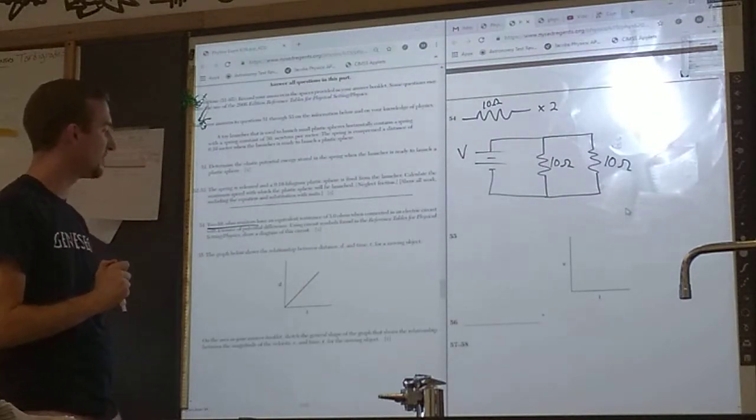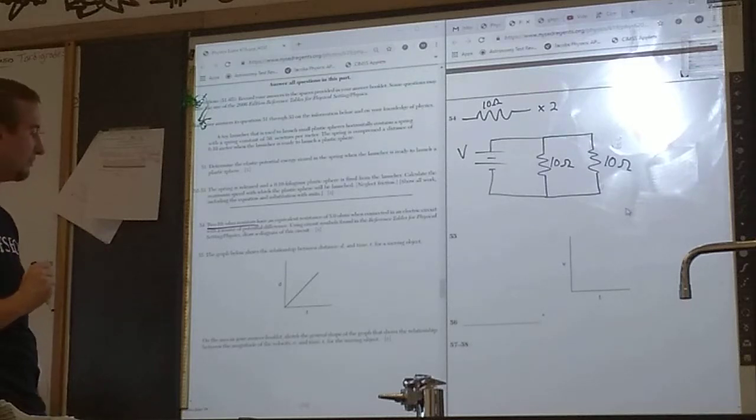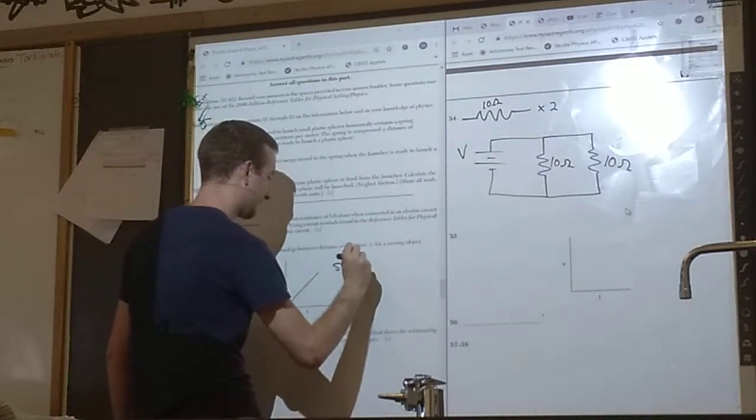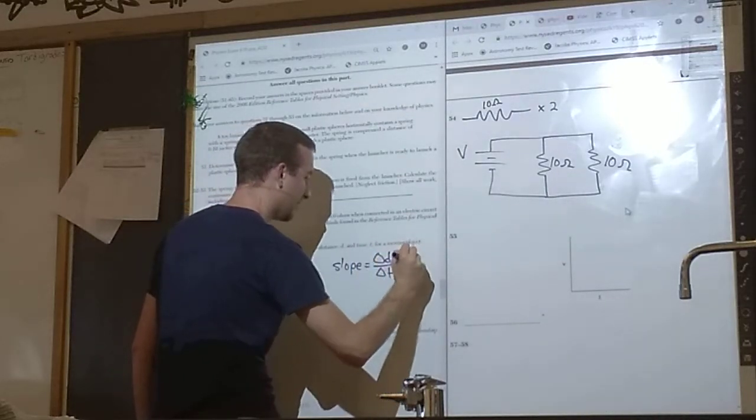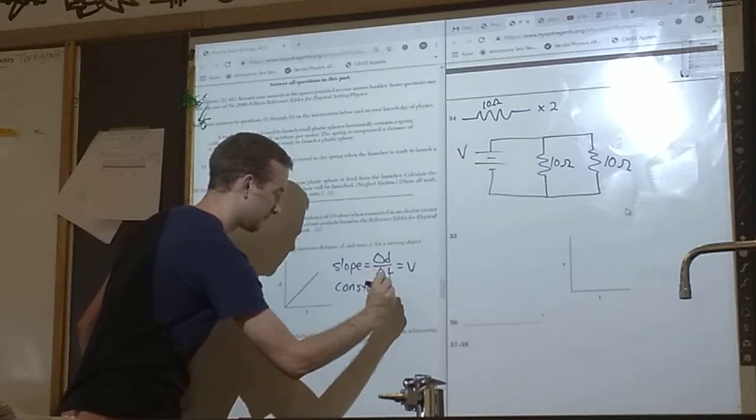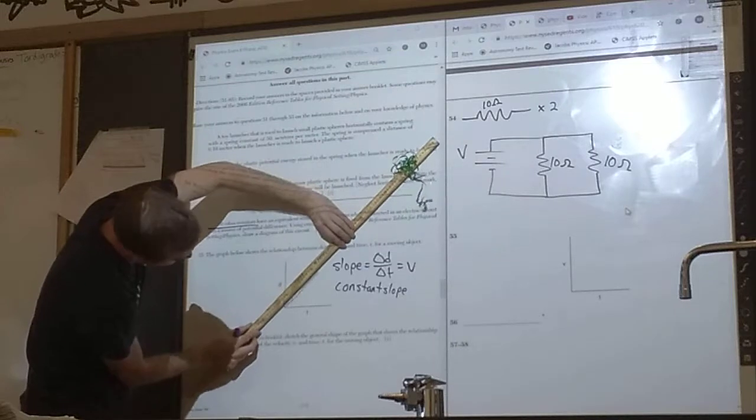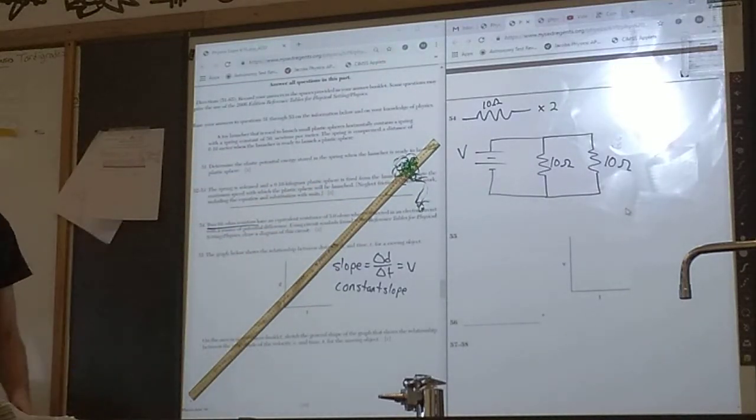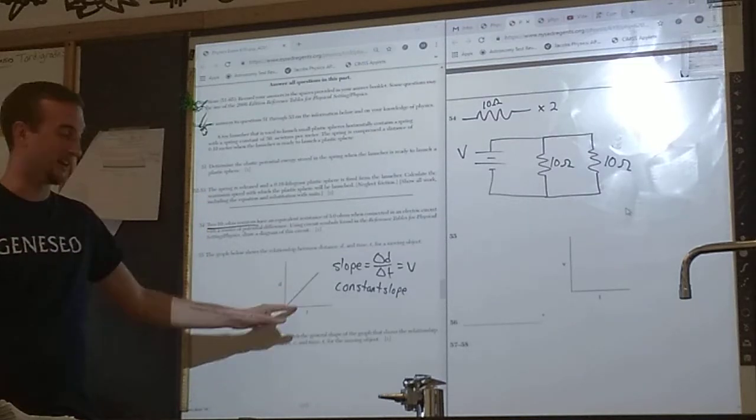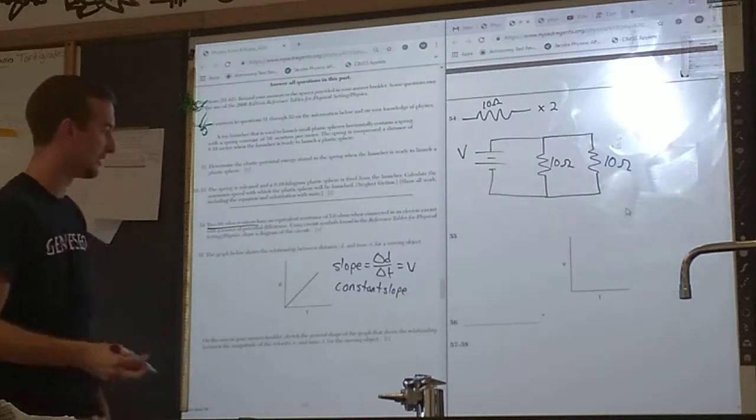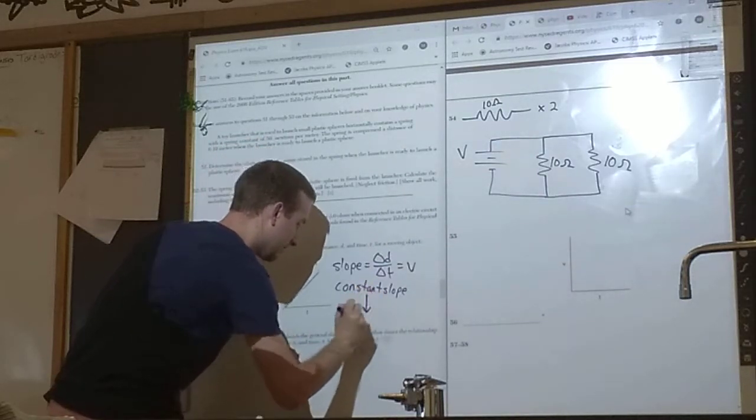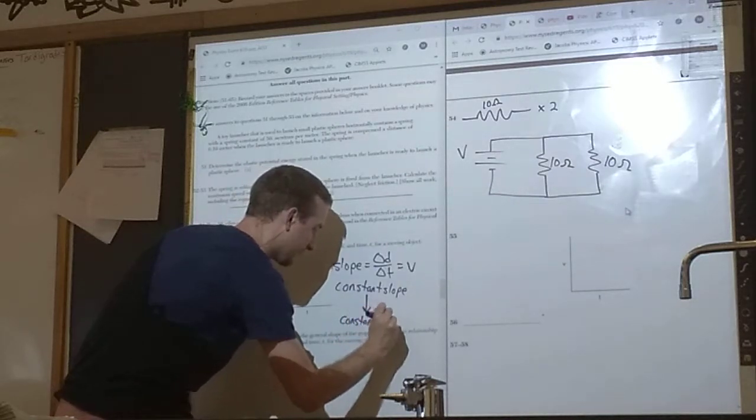Let's look at 55. The graph below shows the relationship between distance D and time T for a moving object. It's a D versus T graph. The very first thing you should be thinking is the slope of a D versus T graph is velocity. Slope is change in distance over time, which means velocity. This is a constant slope. We know it's constant because if we put a straight line next to it, the data on the graph does not deviate from it. Do not mix up constant and something that is increasing but positive. The data is increasing and it is all positive, but this is a constant slope. It does not get steeper or less steep. Therefore, since the slope equals the velocity, a constant slope means this must also have a constant velocity.